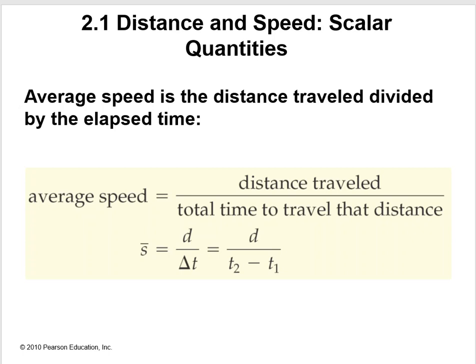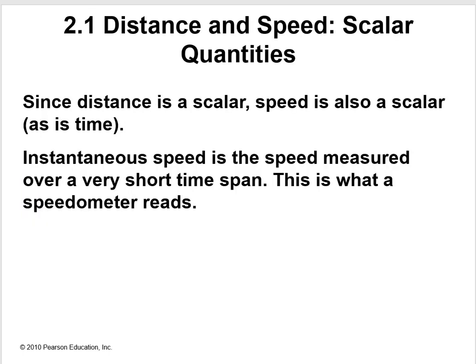It doesn't have to be zero. T1 doesn't have to be zero. It took us 30 seconds, that'd be 30 minus zero is 30. But it could be 35 minus 5. Maybe you took off at the 5 second mark and got done at the 35 second mark. So you'd have 35 minus 5, which would still be 30 seconds. That would be the difference in the time. Since distance is scalar, speed is also a scalar, as is time.